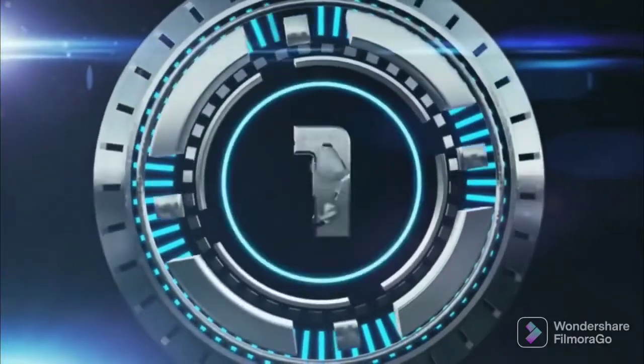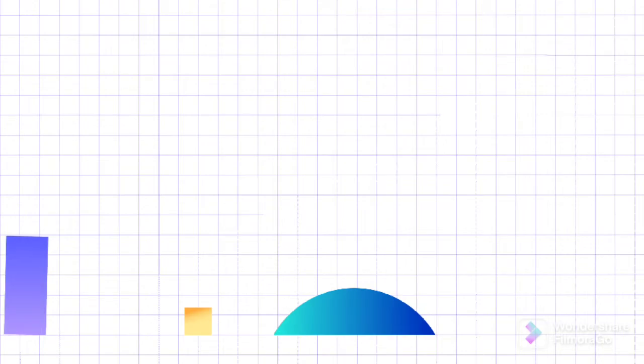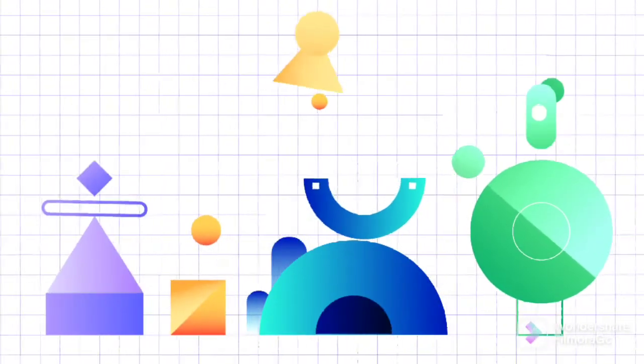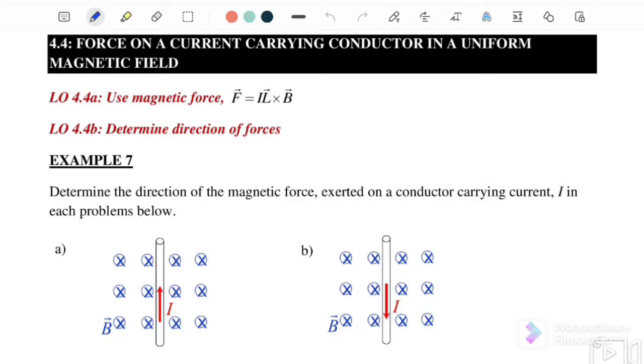Welcome to the channel. Today we will continue with Chapter 4 magnetic field. In this video, we are going to discuss 4.4 force on a current carrying conductor in a uniform magnetic field.